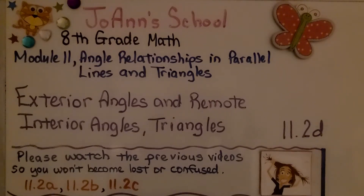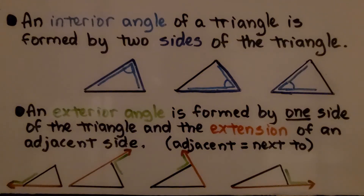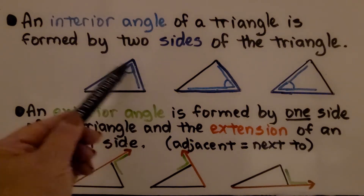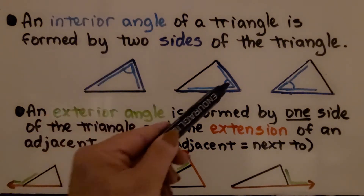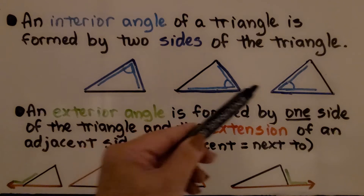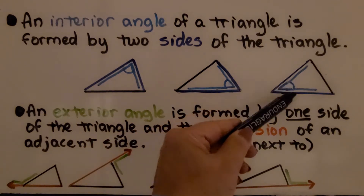Exterior Angles and Remote Interior Angles of Triangles. Lesson 11.2d. An interior angle of a triangle is formed by two sides of the triangle. Here we have an interior angle formed by these two sides, another interior angle formed by these two sides, and this interior angle formed by these two sides.